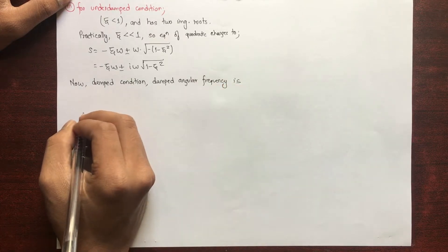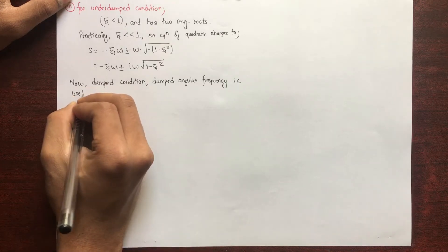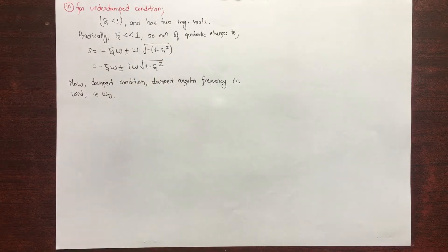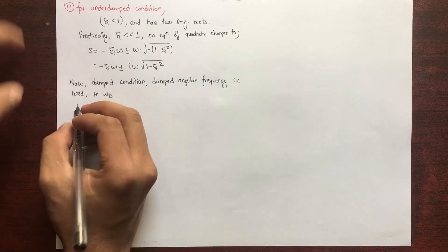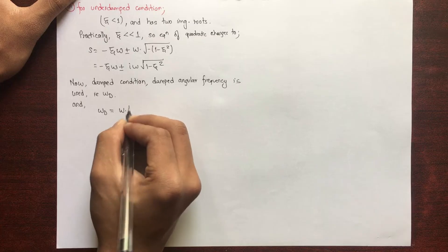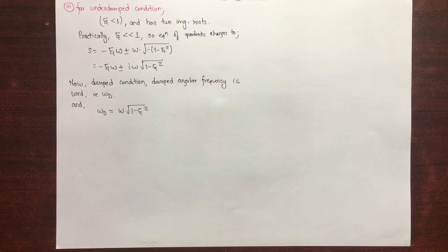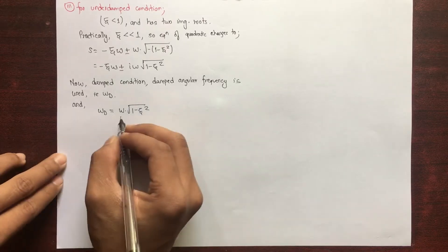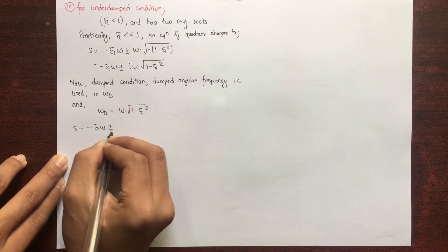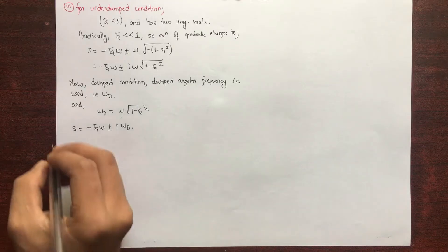We introduce a new term: the damped angular frequency ω_d. Don't get confused with the natural frequency ω. The expression for it is ω_d = ω·√(1 − ξ²). We replace ω·√(1 − ξ²) with ω_d in the above equation, so s equals minus ξω plus or minus i·ω_d. Simply don't confuse ω and ω_d.